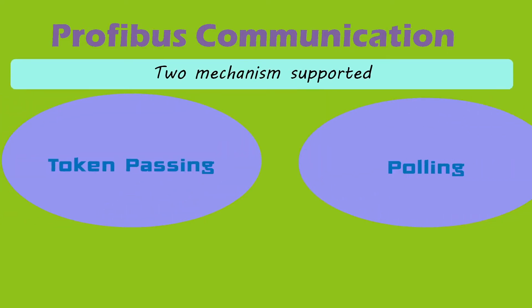Profibus supports two mechanisms for communication: token passing and polling.